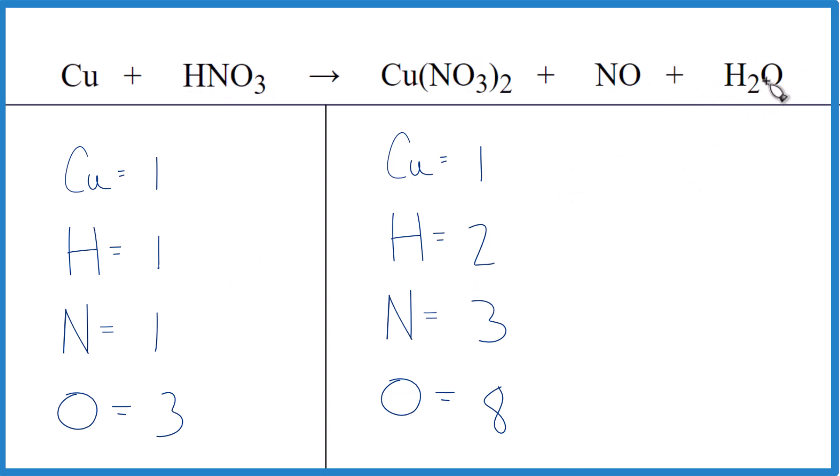So I have two hydrogens here and then just one over here. If I put a two here, two hydrogens, two times one, two nitrogens, two times three, six oxygens. All right, that looks pretty good.